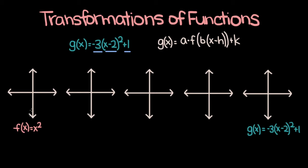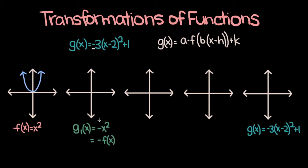So let's start with the parent function f of x is equal to x squared, which we know looks something like this. Now, let's incorporate this negative sign. So let's say we have a function g1 of x, which is negative x squared. G1 of x is just negative f of x, because f of x is x squared, and so negative f of x is negative x squared. If you have a function that is equal to negative f of x, that function is just f of x reflected over the x-axis. So g1 of x is going to look roughly like this.